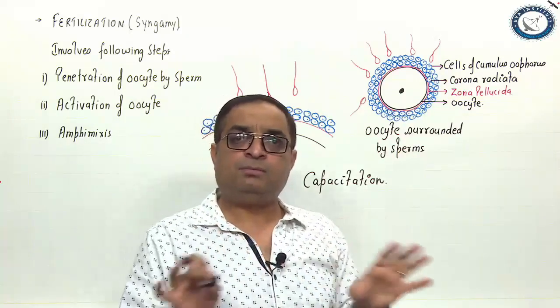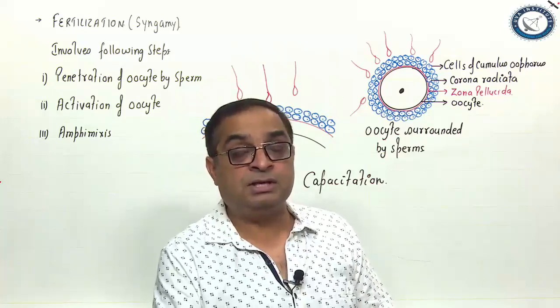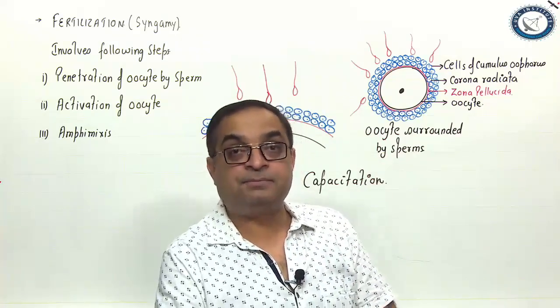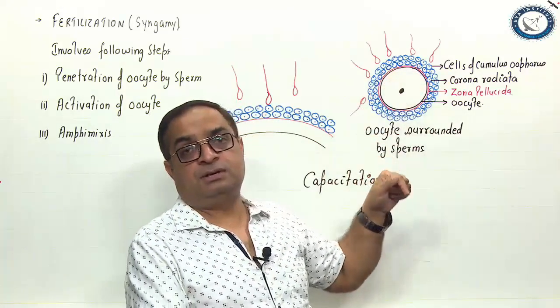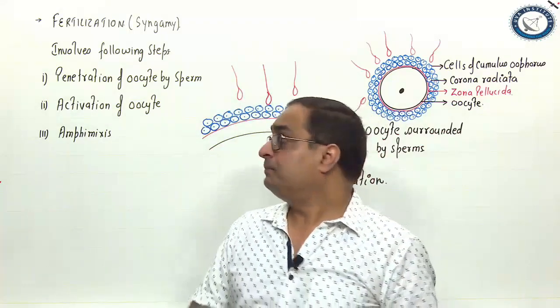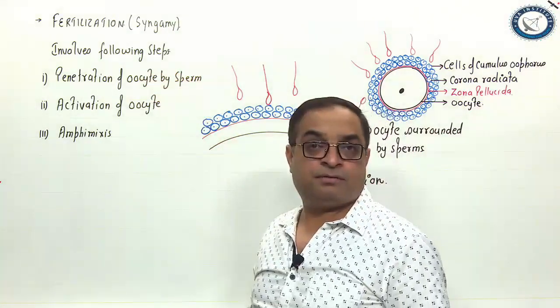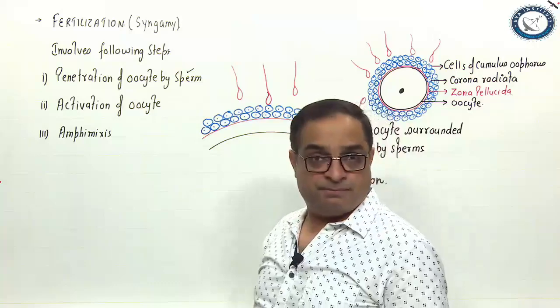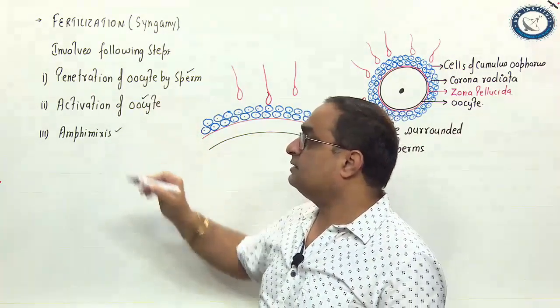Sperms have to remove these membranes which are surrounding the oocyte so that they can finally enter inside the oocyte. As you can see that the oocyte is surrounded by so many sperms, but only one sperm will be able to finally enter into the oocyte. Here I have mentioned the different steps which are involved in fertilization. First is penetration of oocyte by the sperm, second is activation of oocyte, and then third is amphimixis.